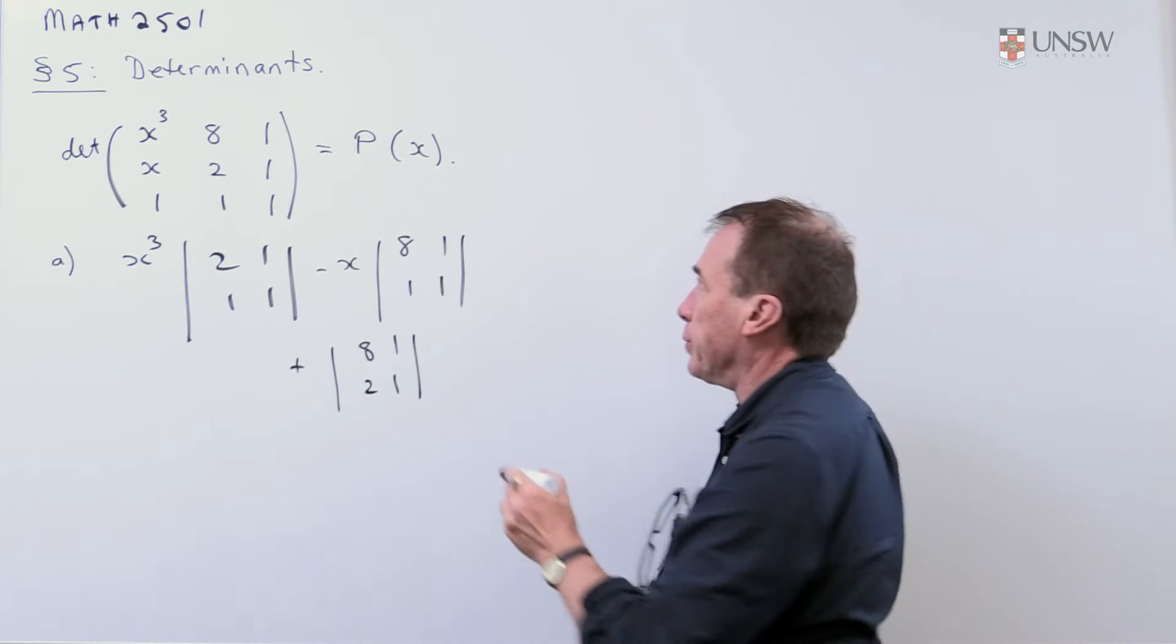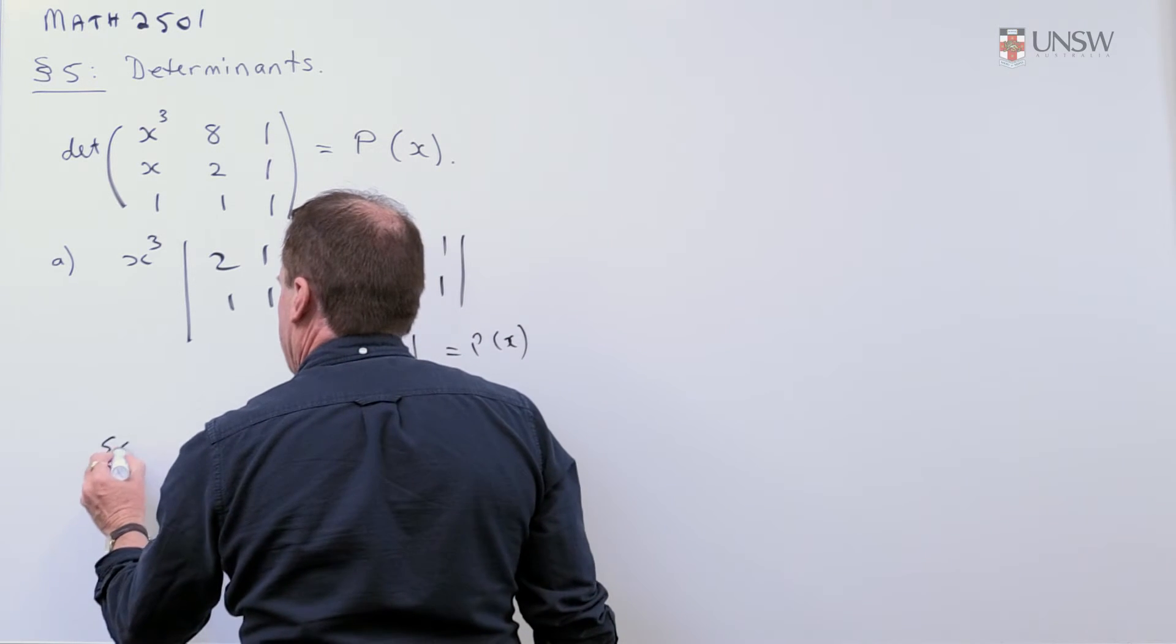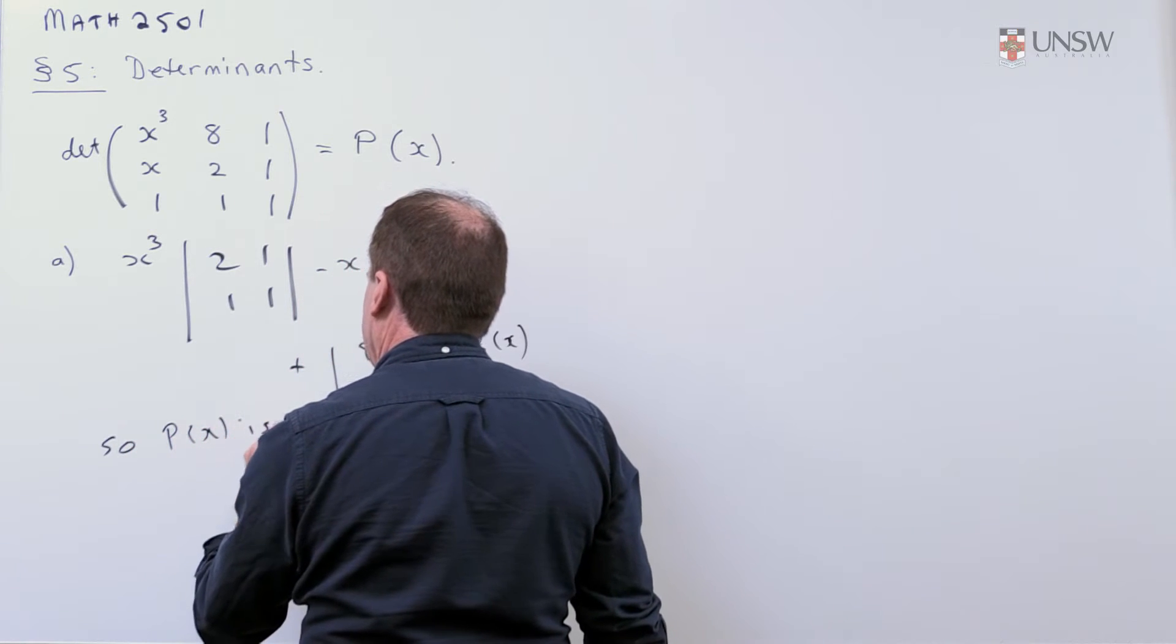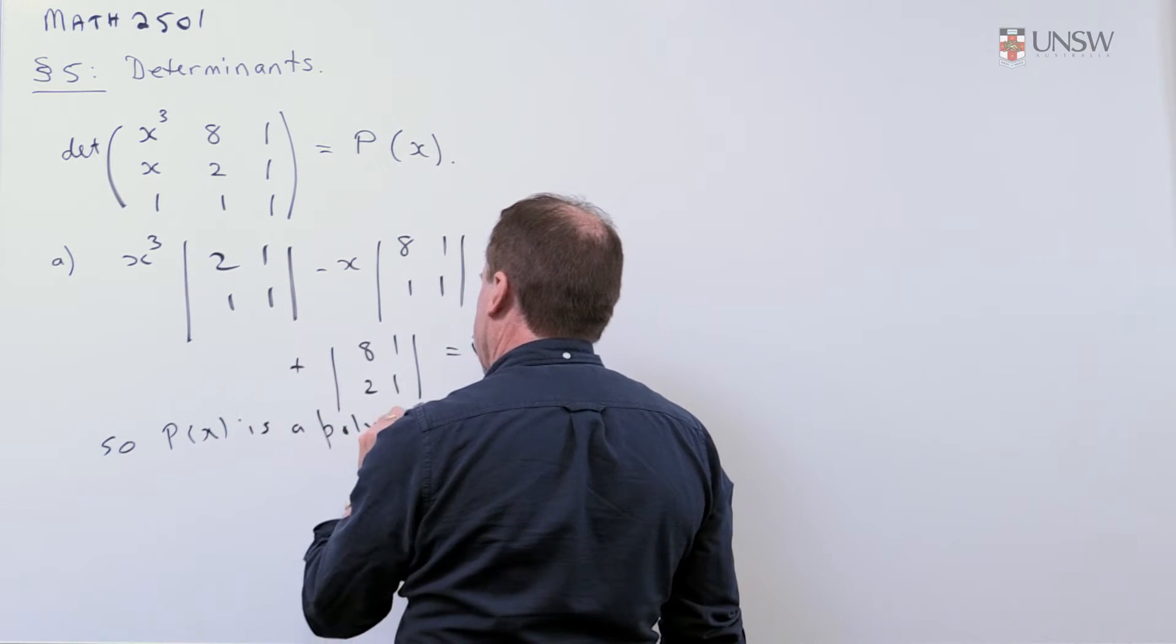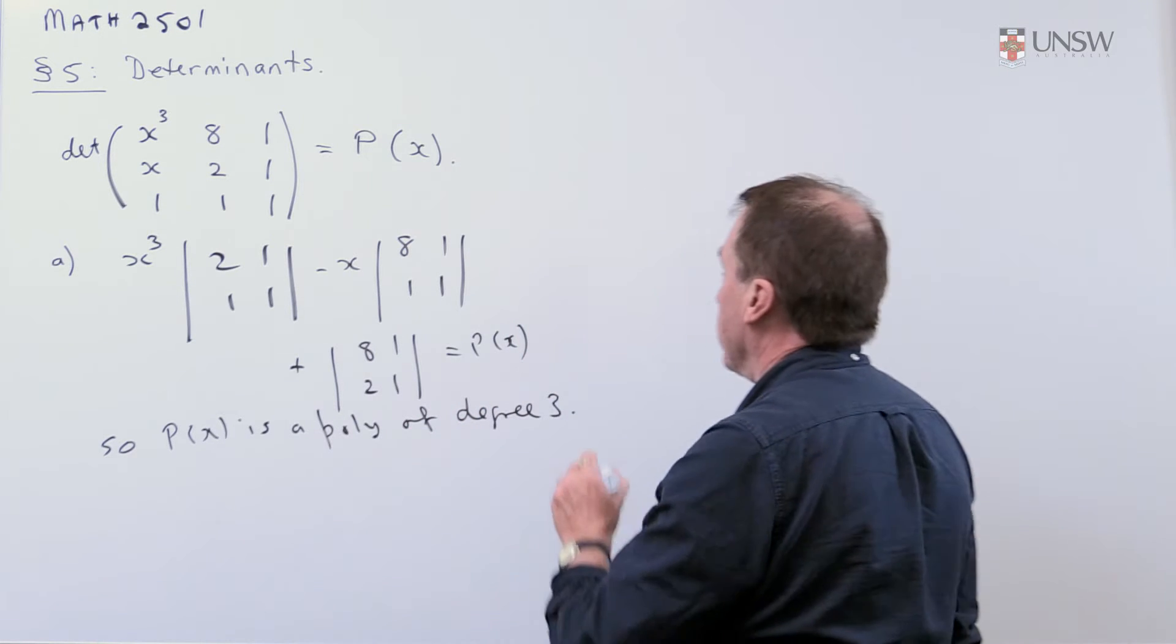And without doing any more, I'm just going to say that that's P(x). And so P(x) is a polynomial of degree 3.